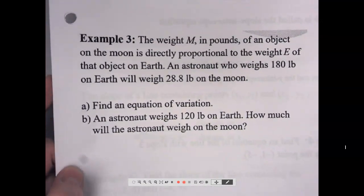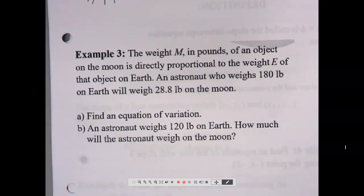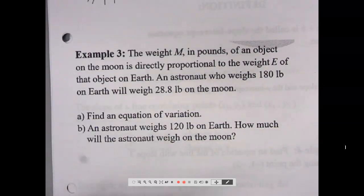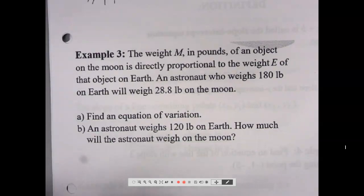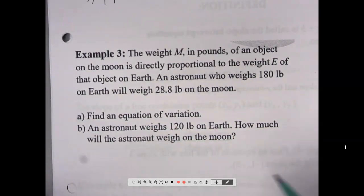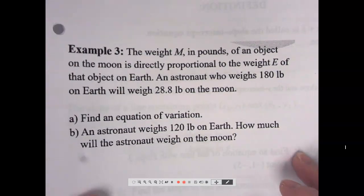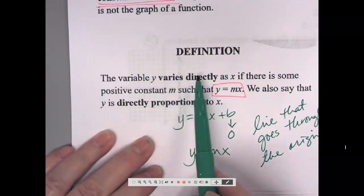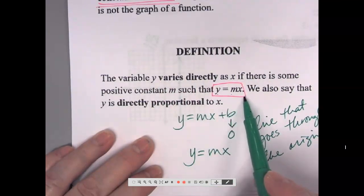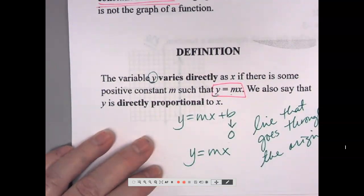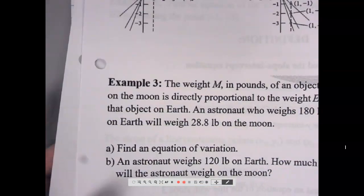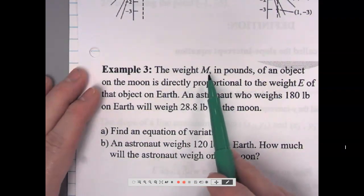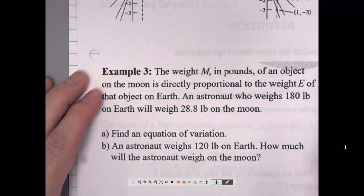Here's a direct variation word problem. The weight m in pounds of an object on the moon is directly proportional to the weight e of an object on earth. An astronaut who weighs 180 pounds on earth will weigh 28.8 pounds on the moon. Find an equation of variation, and then find how much an astronaut who weighs 120 pounds on earth will weigh on the moon. Going back to the setup: if y varies directly as x then y equals mx, so m varies directly with e, meaning m equals slope times e.